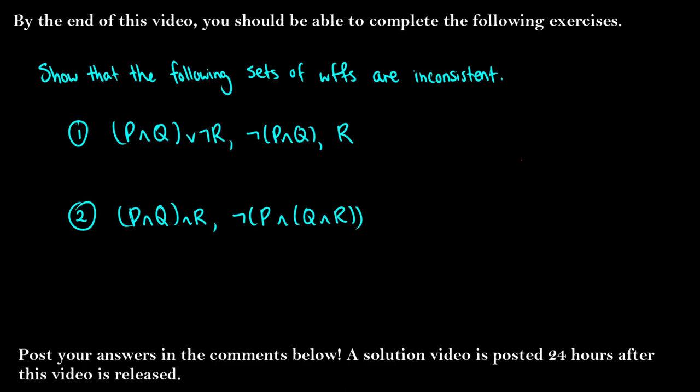In this video I'm going to introduce truth trees and how to find a set of inconsistent well-formed formulas. We're only going to be looking at truth trees with the operators of negation, conjunction, and disjunction in this video, and in the next set we will look at the conditional and the biconditional.